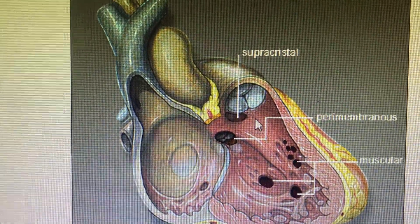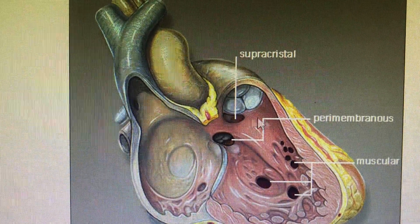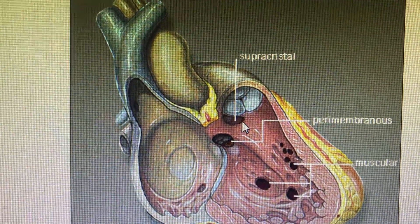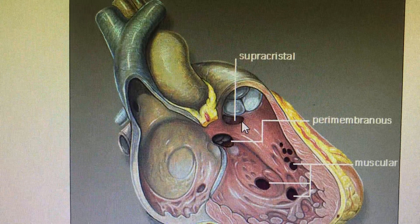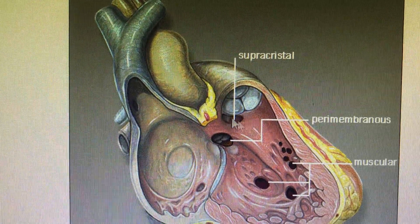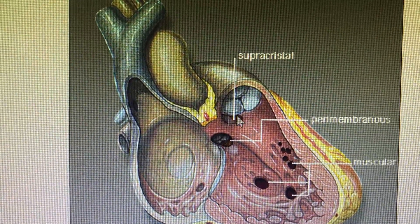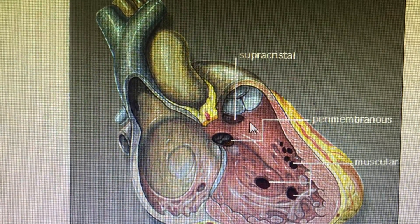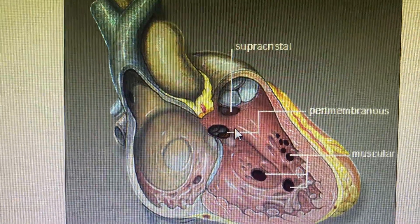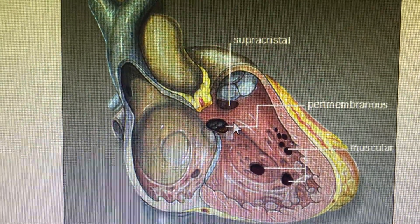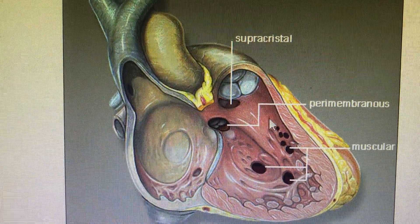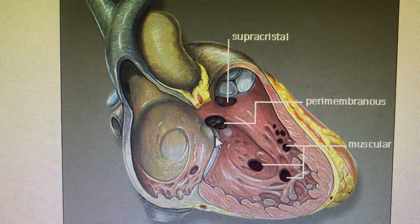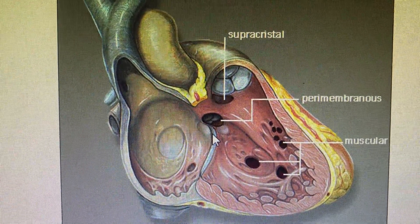The supracrystal VSD, also called the infundibular VSD or subpulmonic VSD, is one where the infundibulum is defective and is located just below the pulmonary artery. These are the major ventricular septal defects, which we will discuss on the next slide.